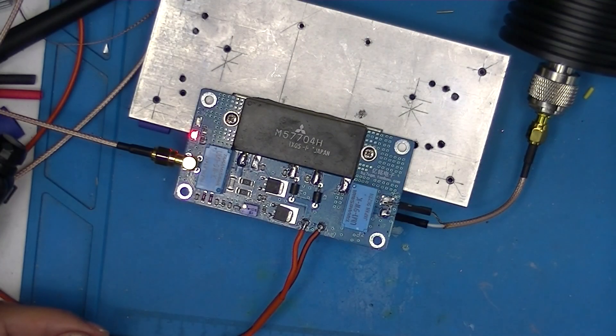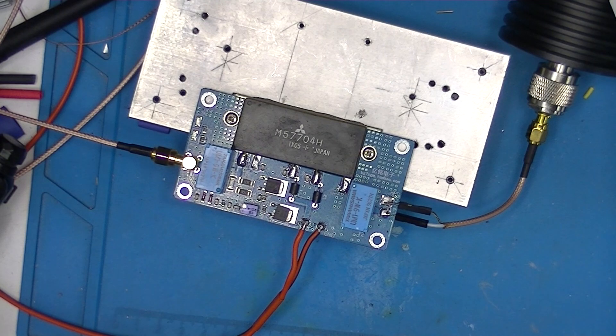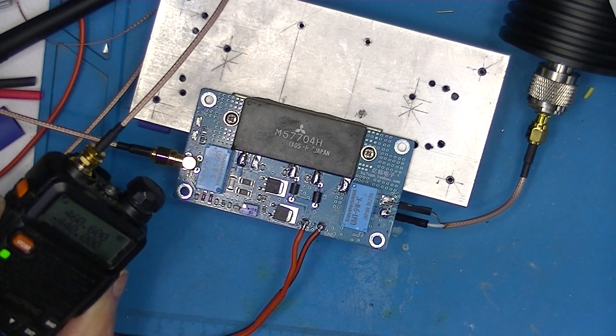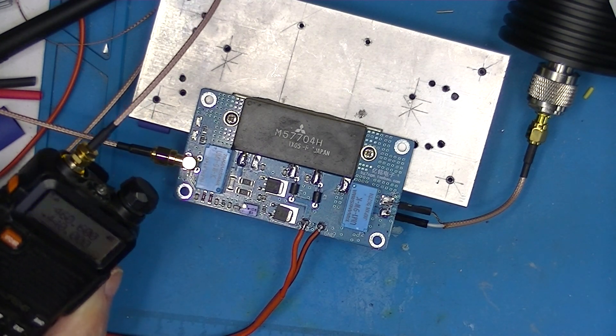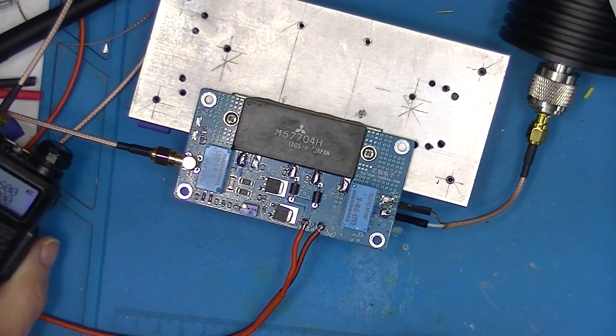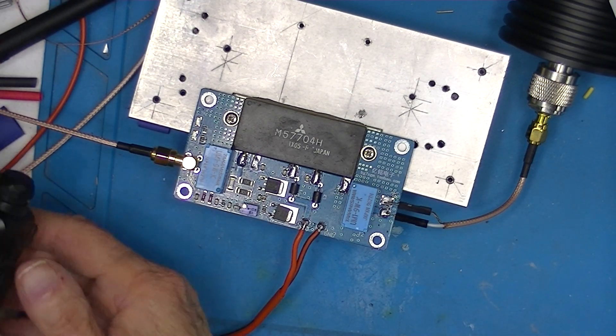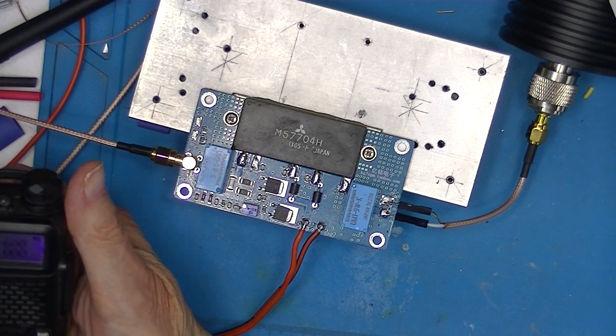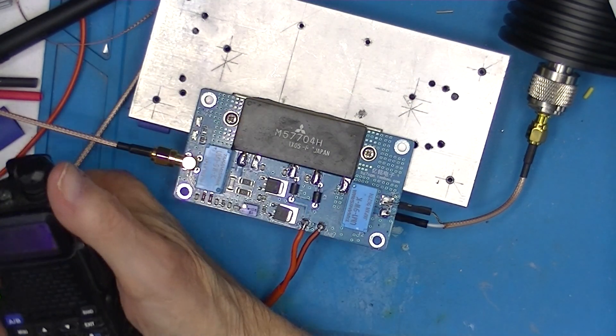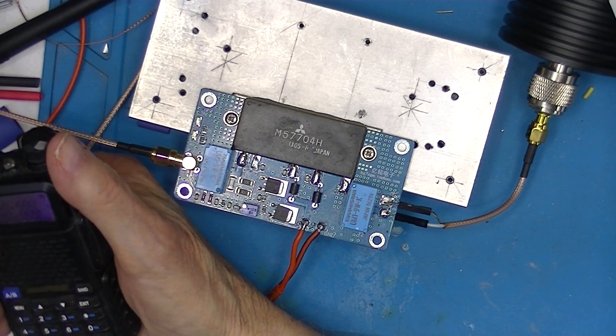So if I turn the power off and key the transceiver, nothing happens. Of course, no power. So I've got it at 440 MHz, 60 dB of attenuation.